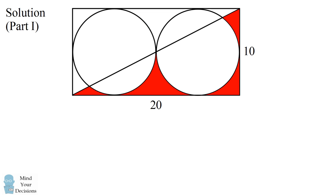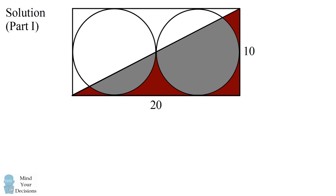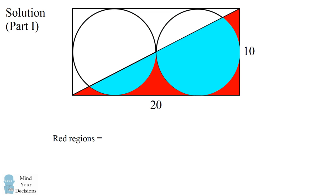Give these problems a try and when you're ready keep watching the video for the solution. We'll get started on the first problem. We'll solve for the area of the red regions by subtraction. We'll take the area of this triangle and then subtract out different portions of the circles. We can set up a formula that the area of the red regions is equal to the area of this right triangle